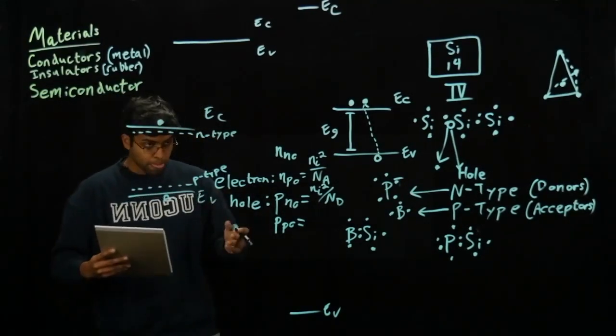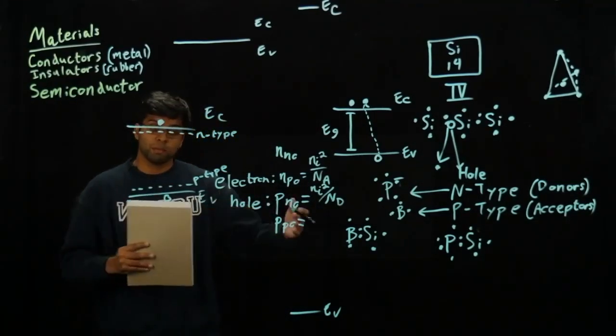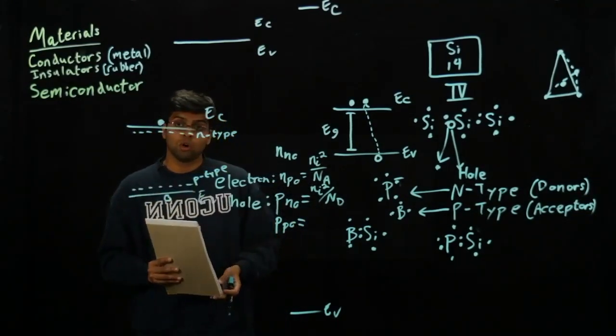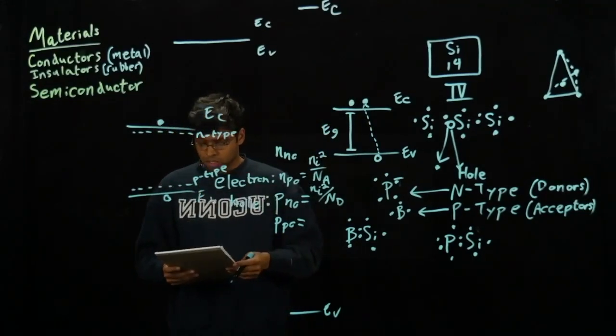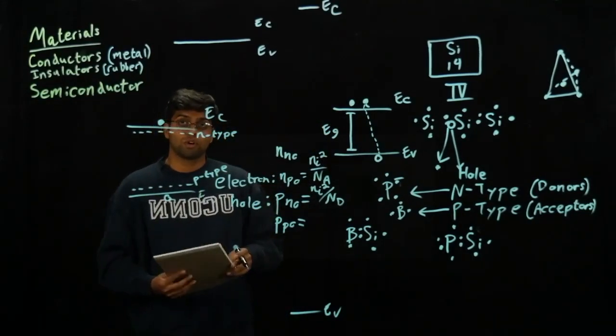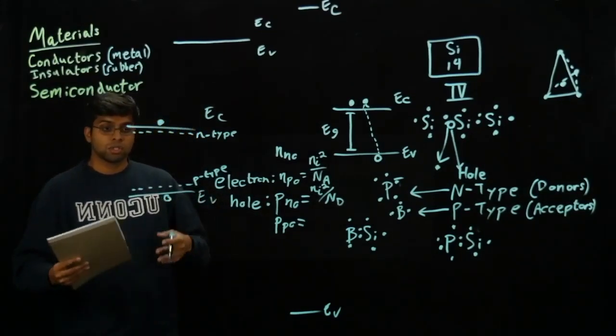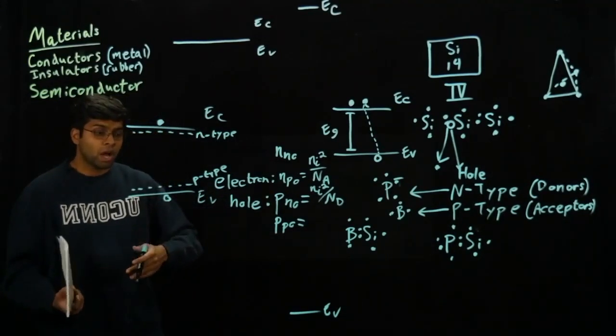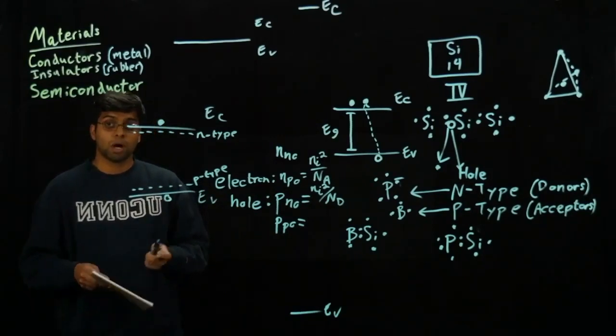That's all I really want to go over for now. It should just be a basic introduction on how to dope semiconductors, why we use silicon, and in the next lecture I'm looking to go over how we represent that more in band diagrams and how we apply this within MOSFETs.